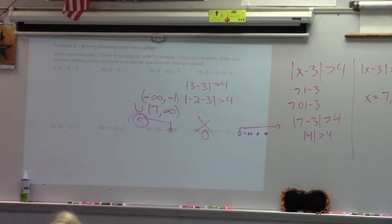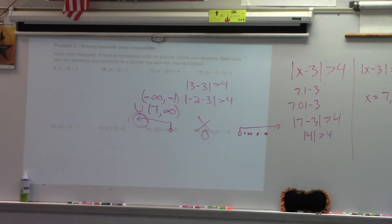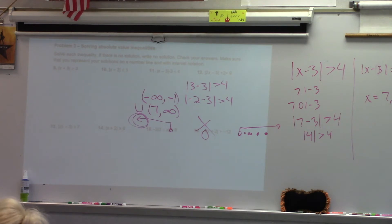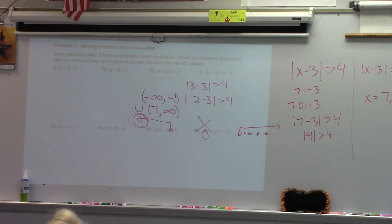Let's test it. You did negative 5 plus 8 earlier, you got 3. What is the absolute value of 3? Is 3 greater than or equal to 3? Yes — so that's a solution. We would have a closed point here and a closed point here — those are making the inequality true. Now we've got to find the rest of the solutions. What are we going to do? Test. Plug in.